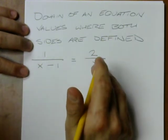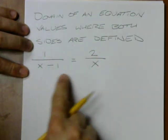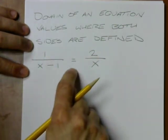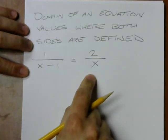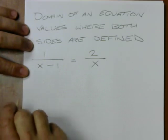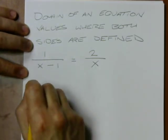I can plug in 5. If I plug in x equals 5, I'll get 1 fourth equals 2 fifths. It'll be false. That's not solving the equation, but I can plug these values in.